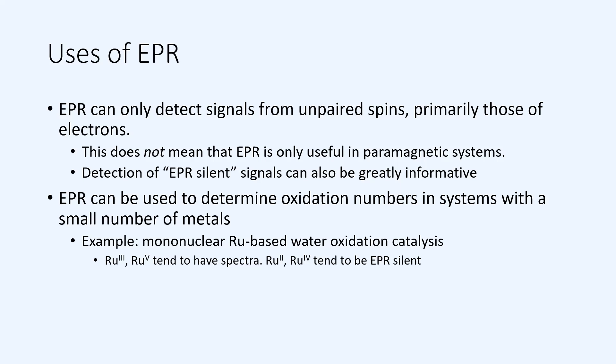For example, again with ruthenium, ruthenium-3 and ruthenium-5 tend to have EPR spectra, whereas ruthenium-2 and ruthenium-4, with an even number of electrons, tend to be EPR silent.